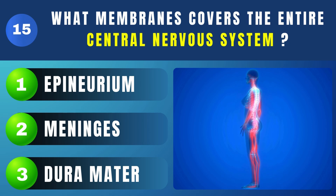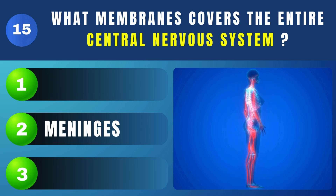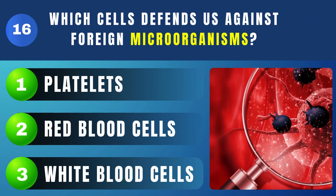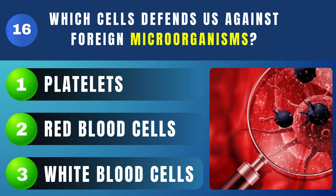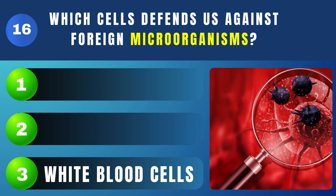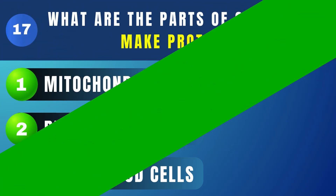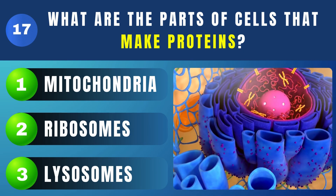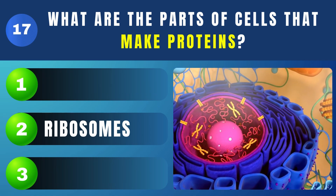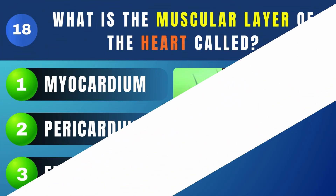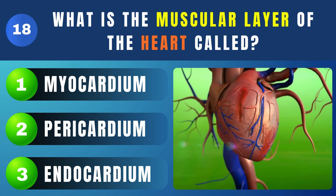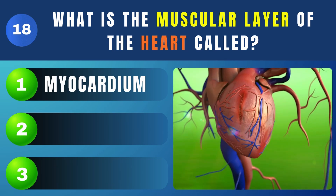What membranes cover the entire central nervous system? Meninges. Which cells defend us against foreign microorganisms? White blood cells.